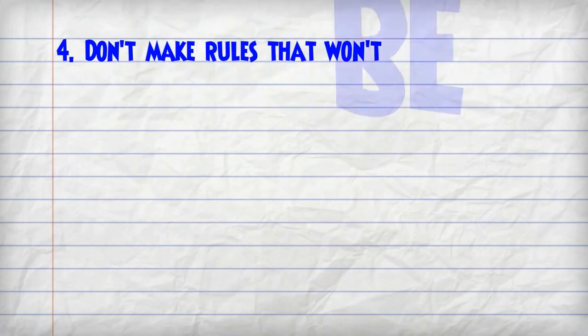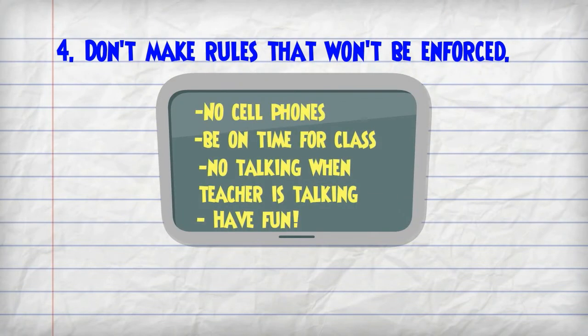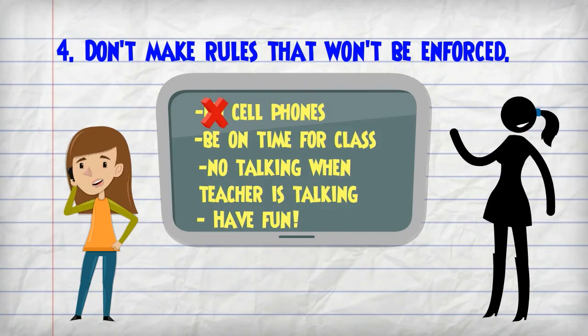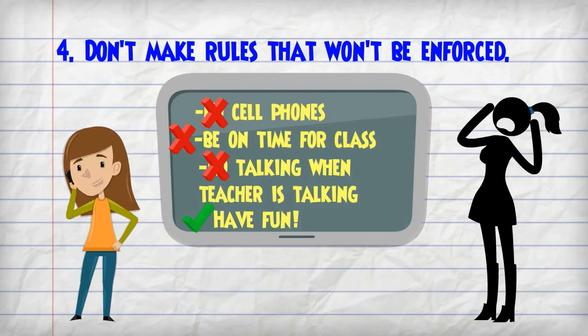The fourth rule is don't make rules that won't be enforced. Nothing is worse when students realize that a rule has no power. If one of them will not be enforced, then they believe the rest will not be enforced.